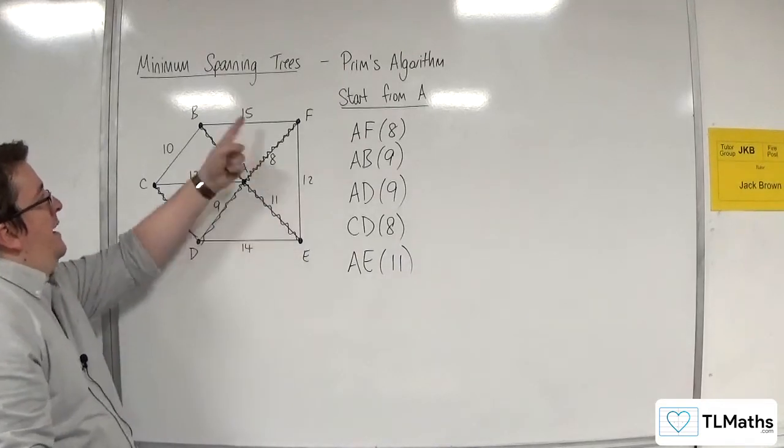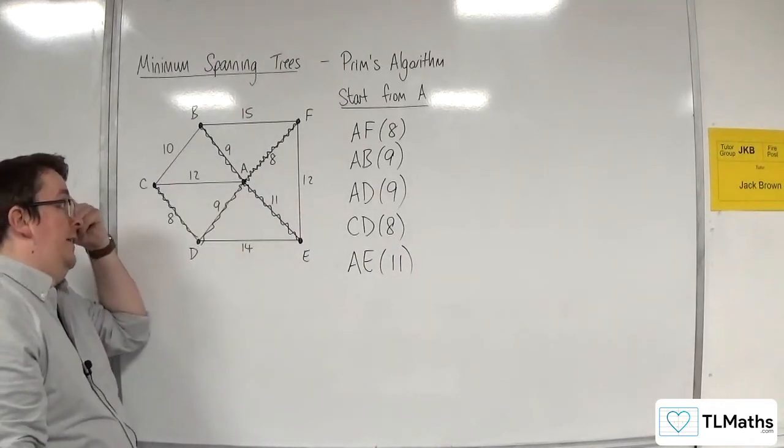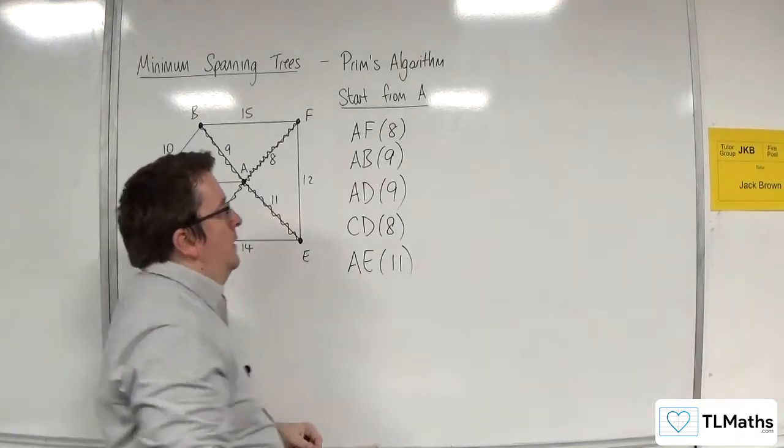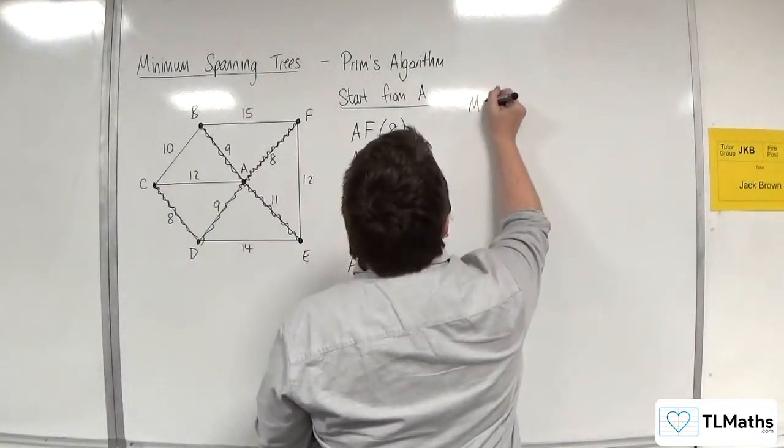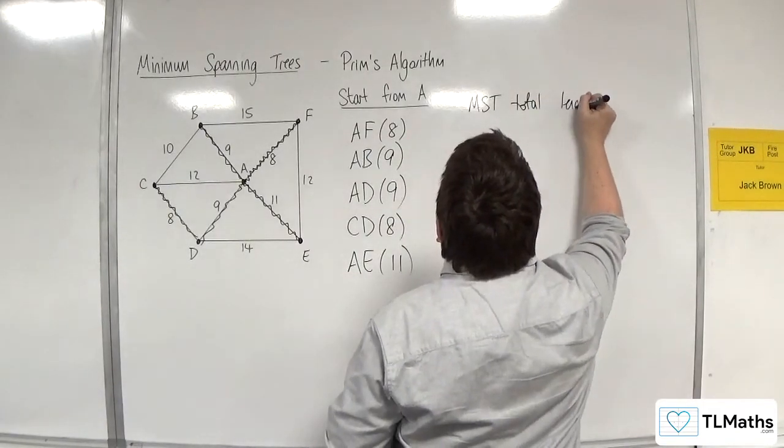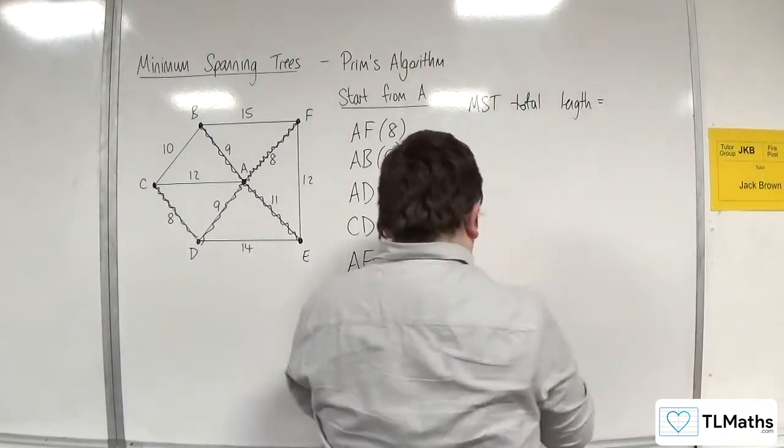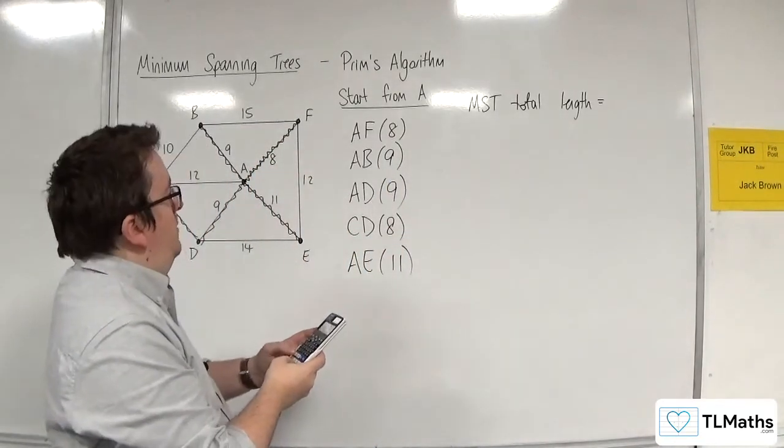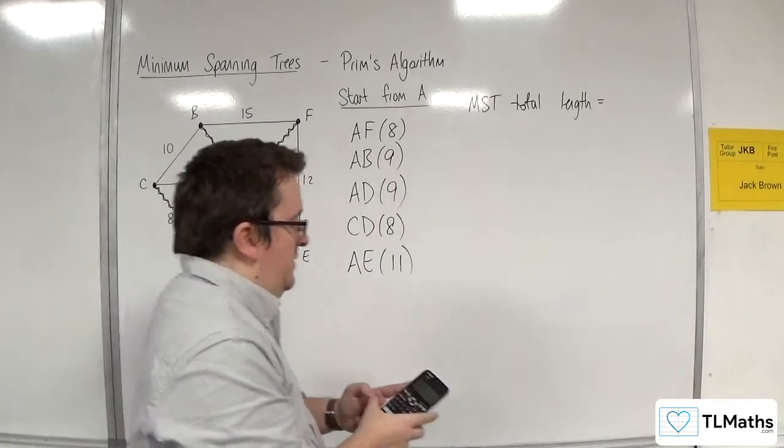And so I have now connected all of the vertices. We have a tree, and so I am done. So the minimum spanning tree total length is 8 plus 9 plus 9 plus 8 plus 11. So 45.